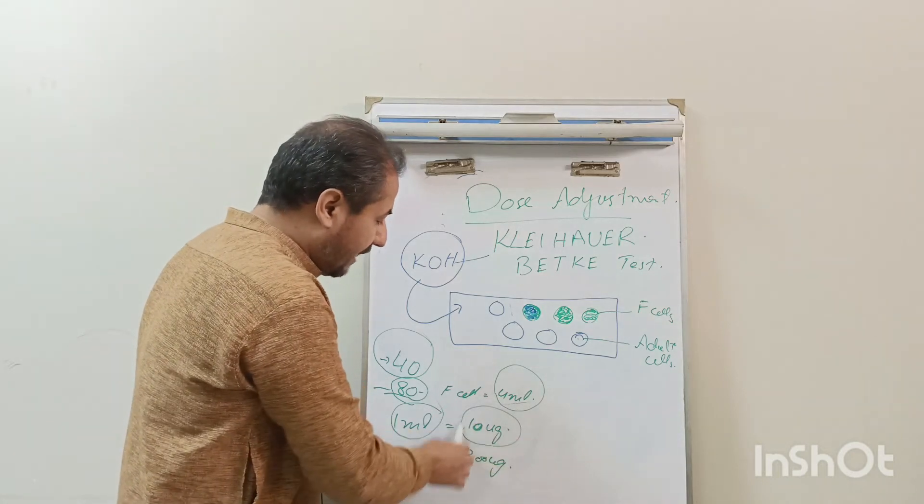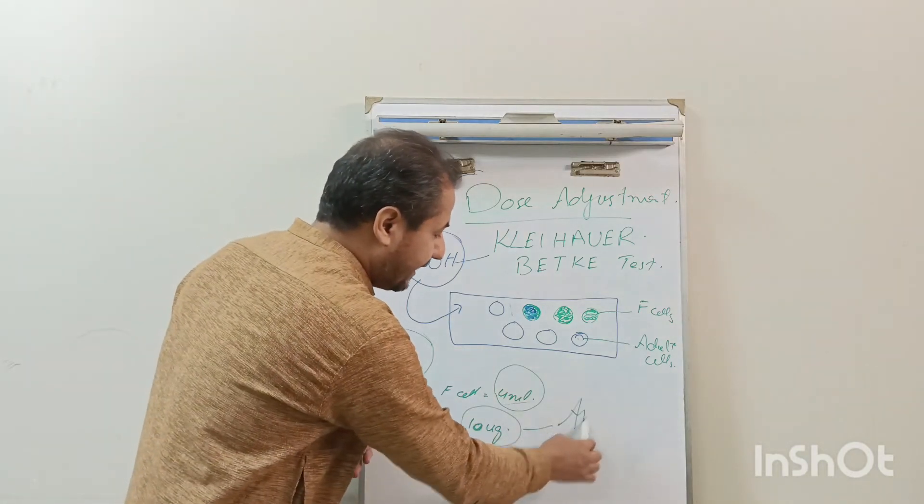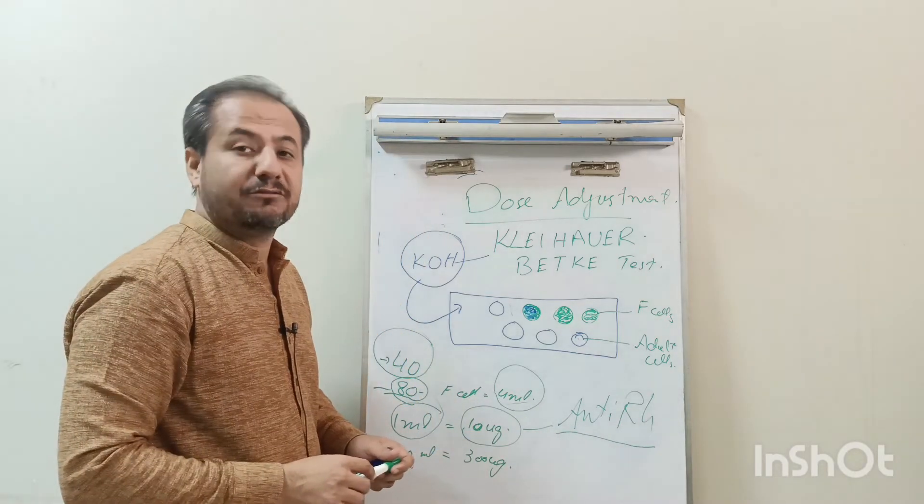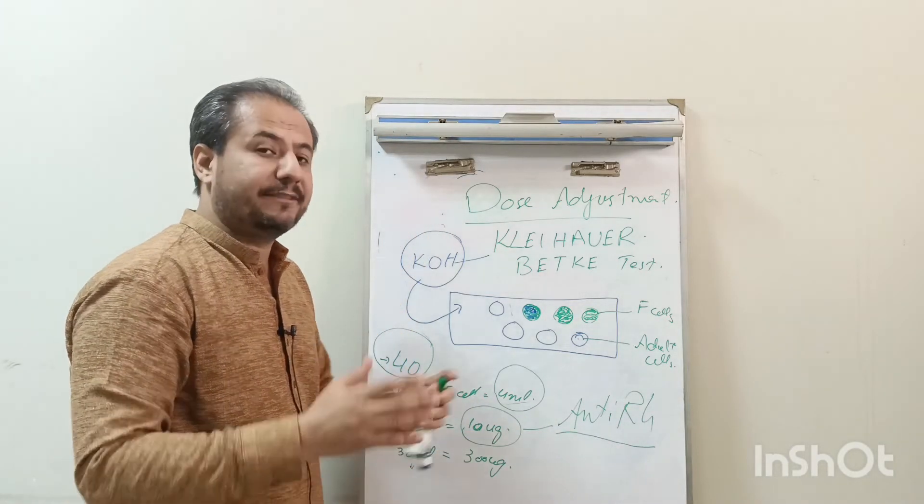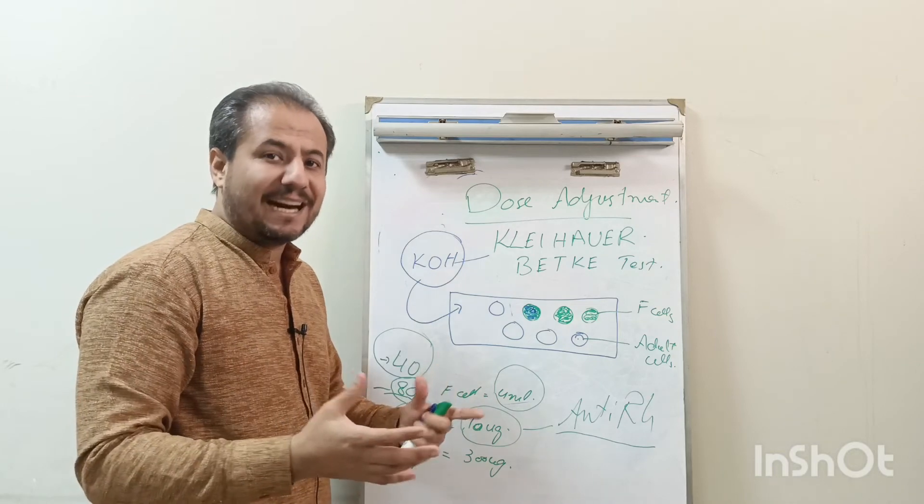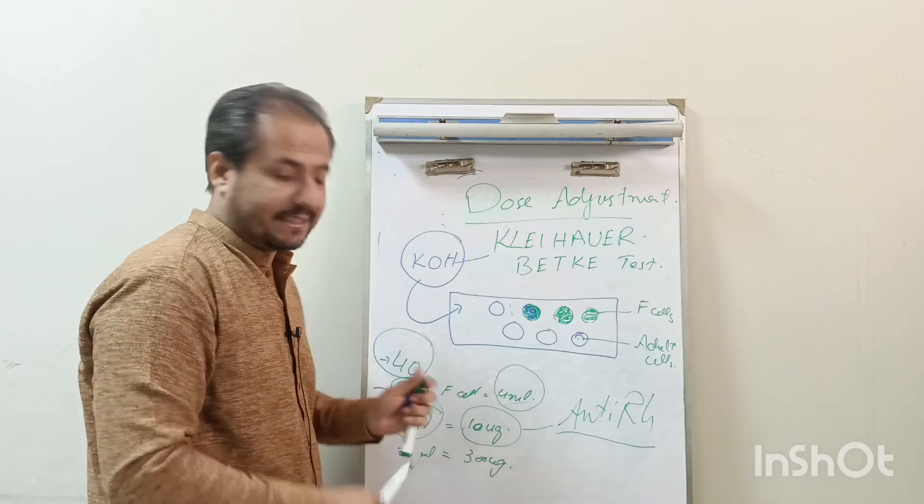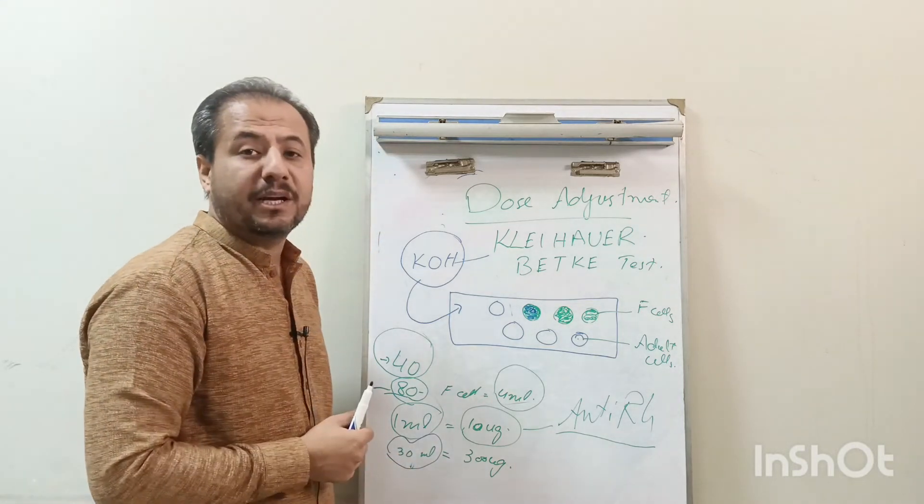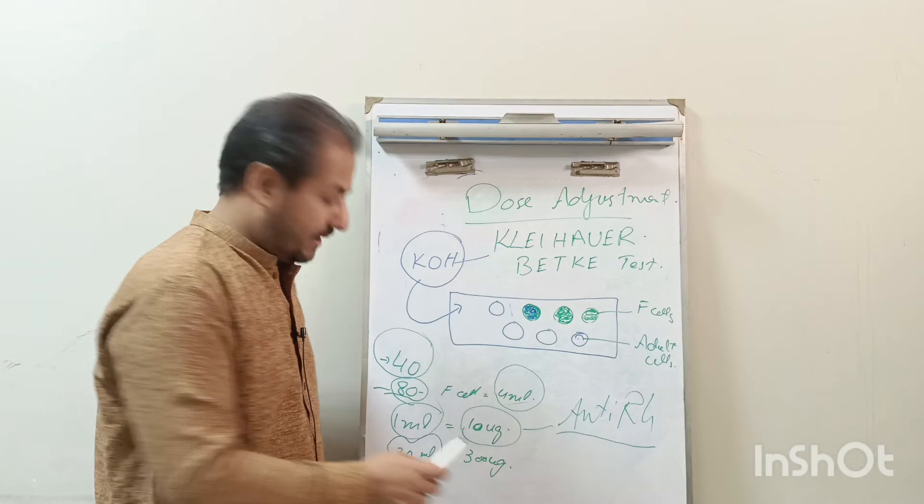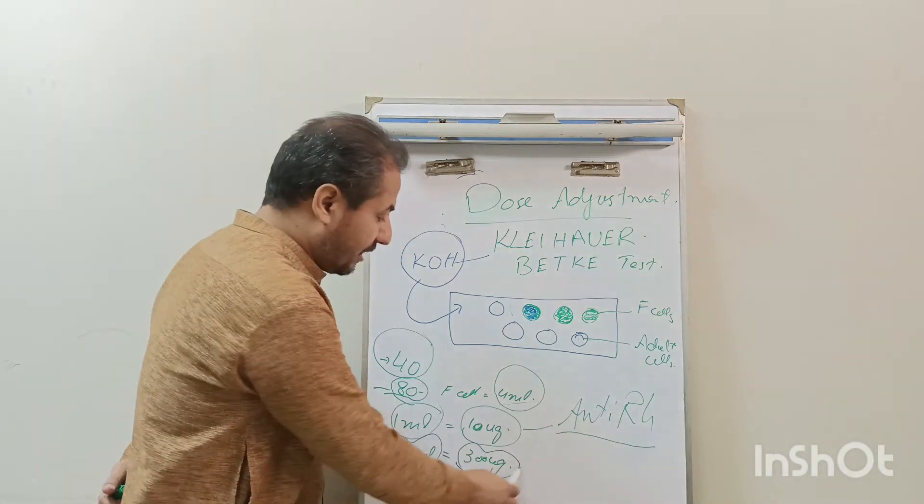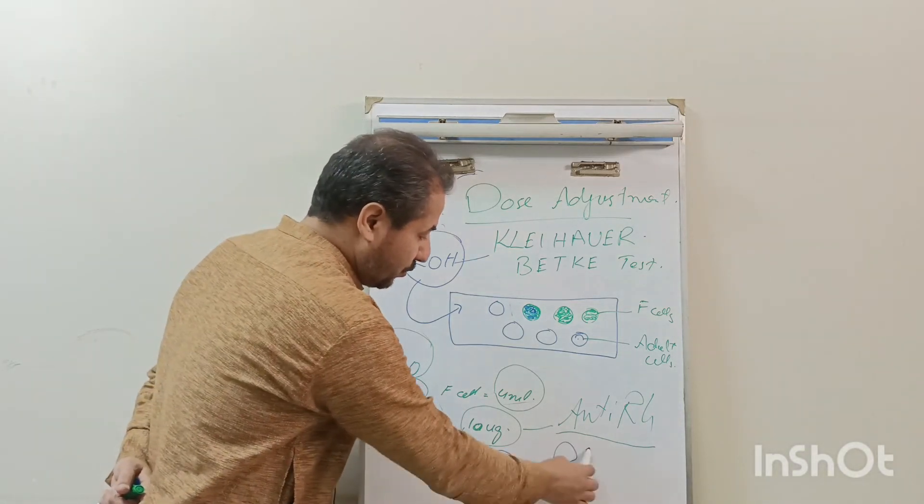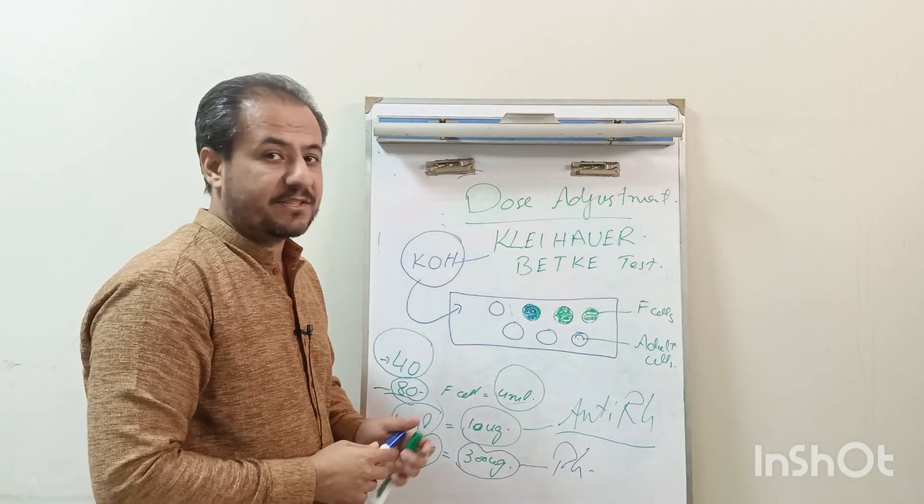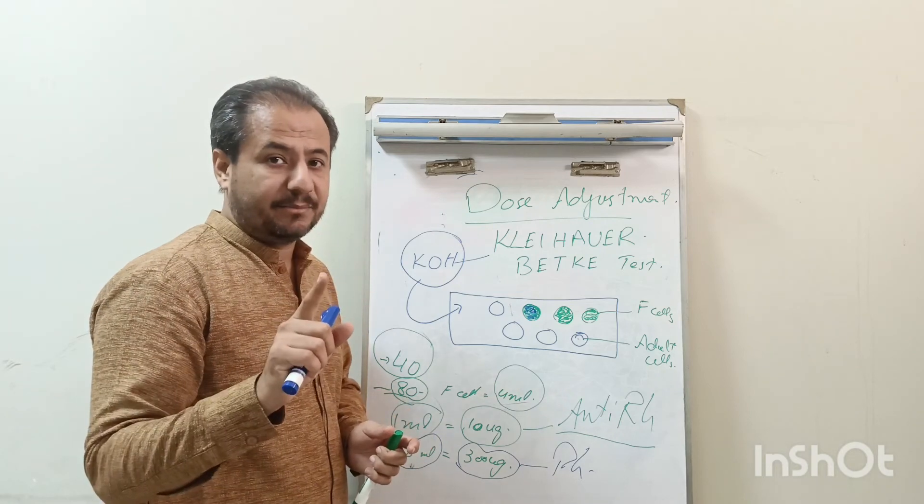For 1 ml of fetal-maternal hemorrhage, 10 micrograms of RhoGAM or anti-Rh antibody will be administered to the female. If there is increased concentration of fetal-maternal hemorrhage, for example if 30 ml of fetal-maternal hemorrhage occurred, we will administrate 300 micrograms of RhoGAM to the female. Remember, this RhoGAM should be intramuscularly administered, not intravenously.